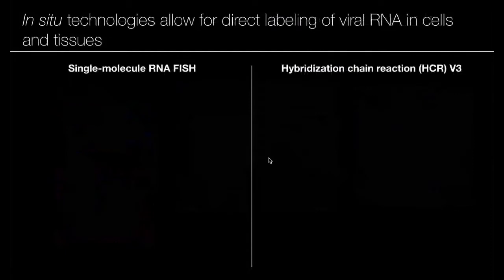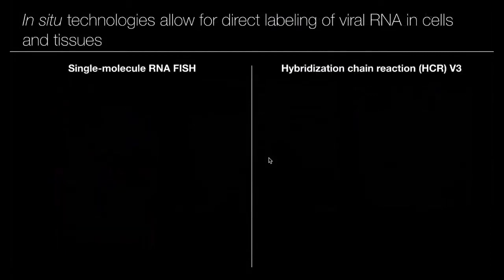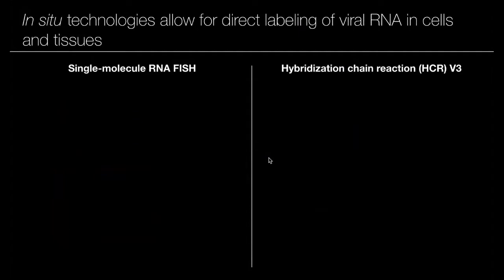We can design probes off of these principles to be very specific for a particular sequence. For SARS-CoV-2, we've been working with two primary technologies. The first one is single molecule RNA-FISH, and the second one is hybridization chain reaction V3. They have their own strengths and weaknesses, and we've identified different applications for these two technologies.